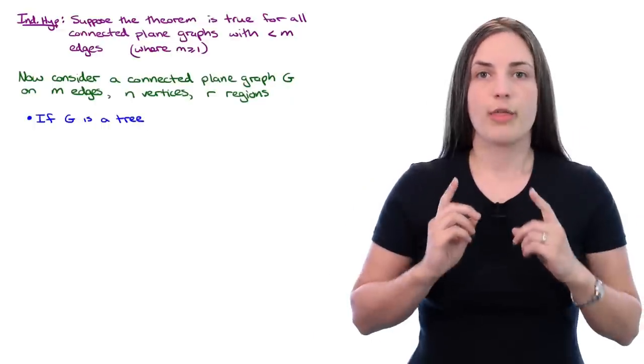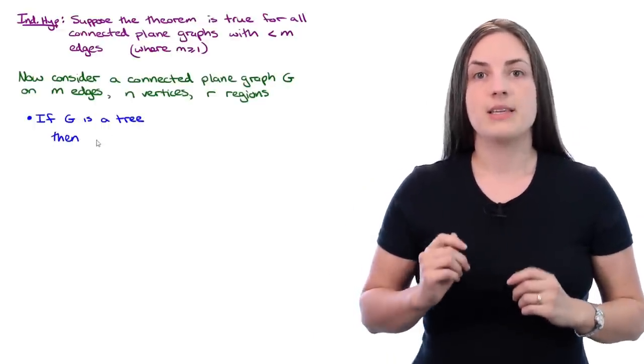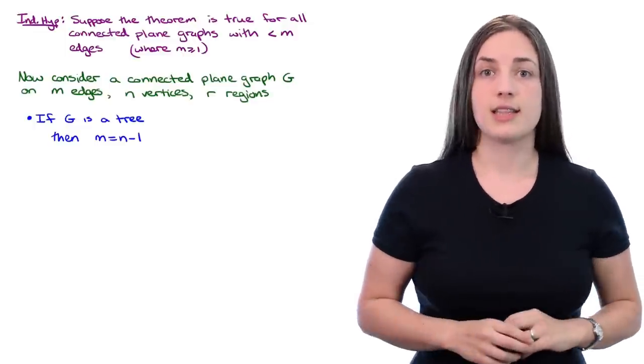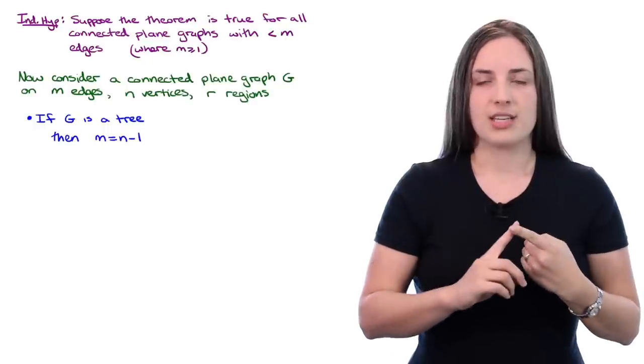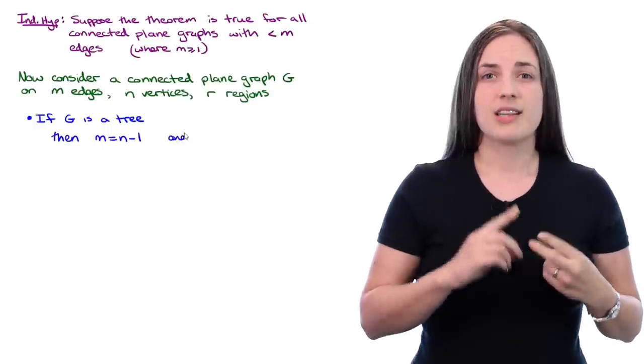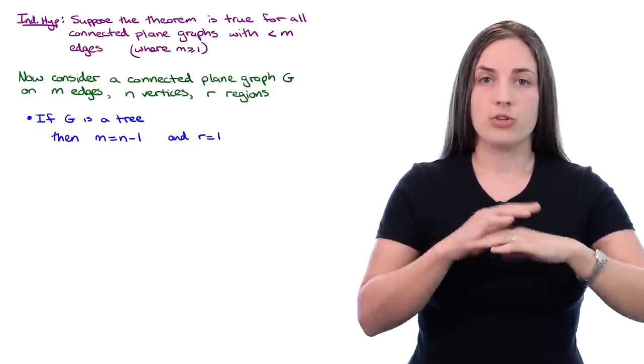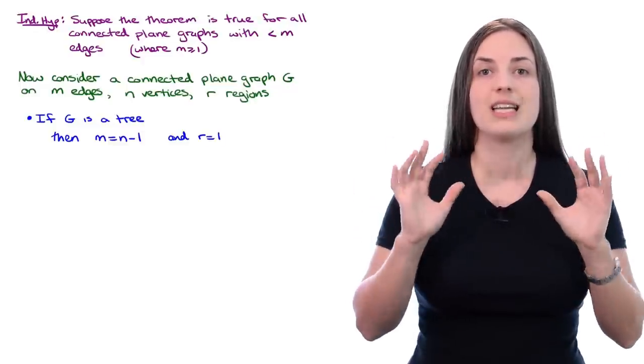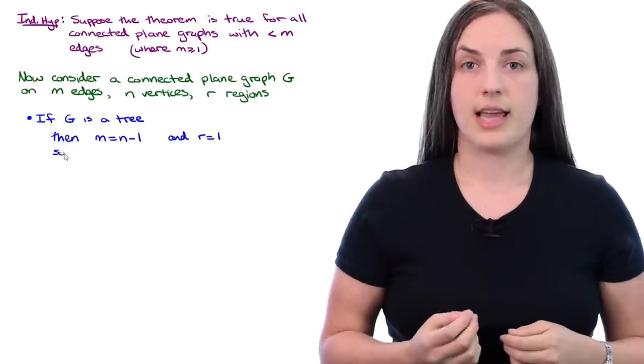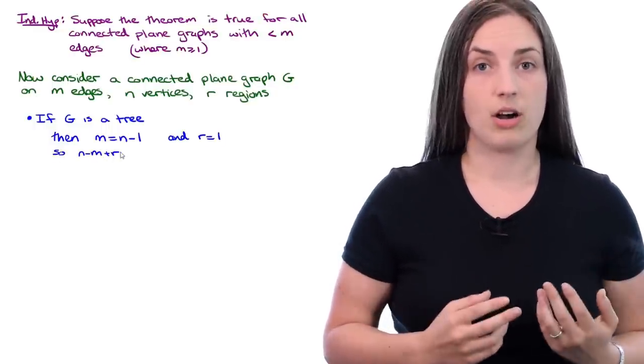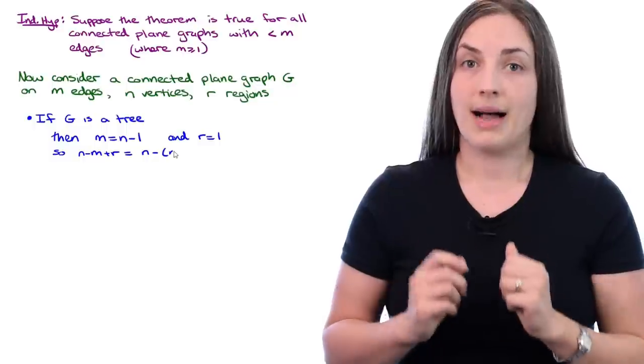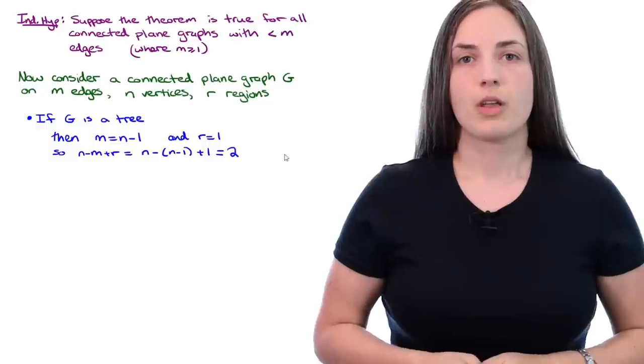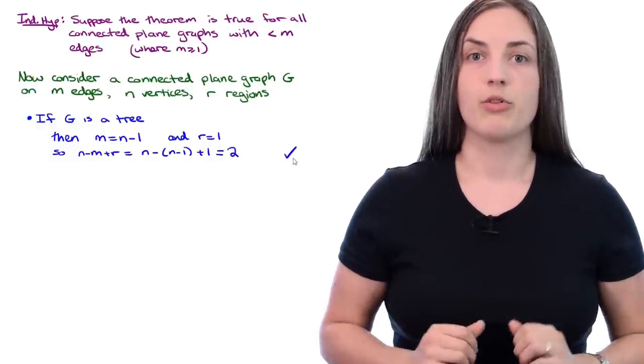Our first case to consider is if G is a tree. That will tell us that M is equal to N minus one. Also notice that there will be exactly one region, because when you draw a tree, having no cycle means that no region is closed off. So N minus M plus R equals N minus (N minus one) plus one, which equals two. So if G is a tree, we're done.